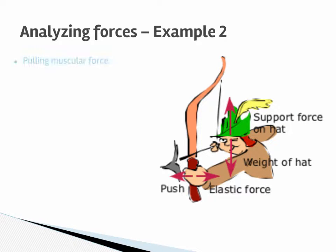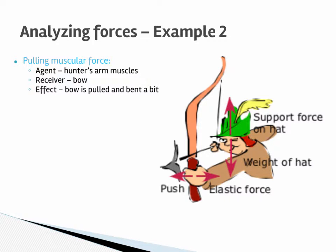Here you have four forces. So we have a pulling muscular force from the agent on the bow, from the hunter on the bow. And the effect is that the bow is pulled back.